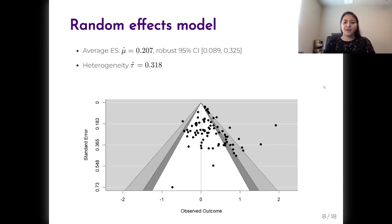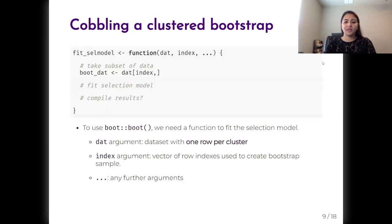Hi, I'm Megha, and I'm going to go over how to cluster bootstrap selection models. To implement a cluster bootstrap using the boot package, we need a function to fit the selection model, which takes in a dataset with one row per cluster. The function also has to have an index argument, which is a vector of row indexes used to create the bootstrap sample. And then it can include any further arguments.